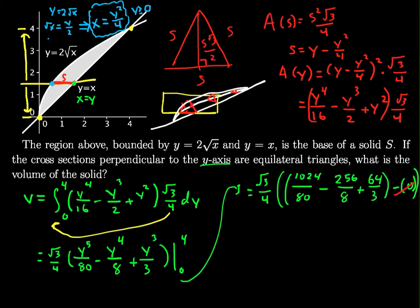Let's reduce this down. I still have root 3 over 4. 1024 divided by 80, they both have terms of 16 in them, so I get 64 fifths. 8 goes into 256, that gives me 32. And then 64 thirds does not reduce.